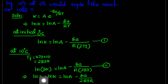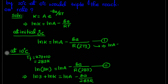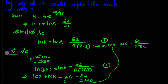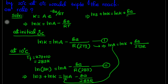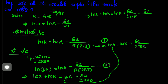We can remove LnA by substituting from equation 1: LnA equals LnK plus Ea by 273R. Substituting this into equation 2, we get Ln3 plus LnK equal to LnK plus Ea by 273R minus Ea by 283R. LnK cancels from both sides, leaving Ln3 equal to Ea times (1 over 273R minus 1 over 283R).